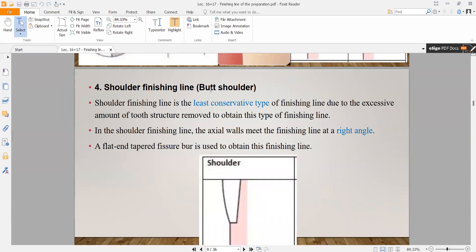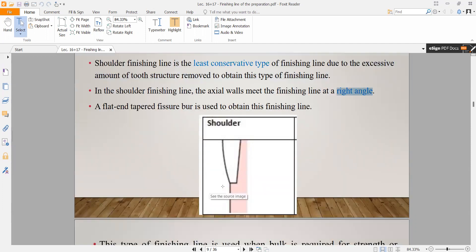Shoulder, the fourth type, also called butt shoulder. Shoulder is the least conservative of the finishing lines due to the excessive amount of tooth structure removed to obtain this type. As we said, it's not conservative because it takes a large amount from the tooth. In the shoulder finishing line, the axial wall meets the finishing line at a right angle - 90 degrees.